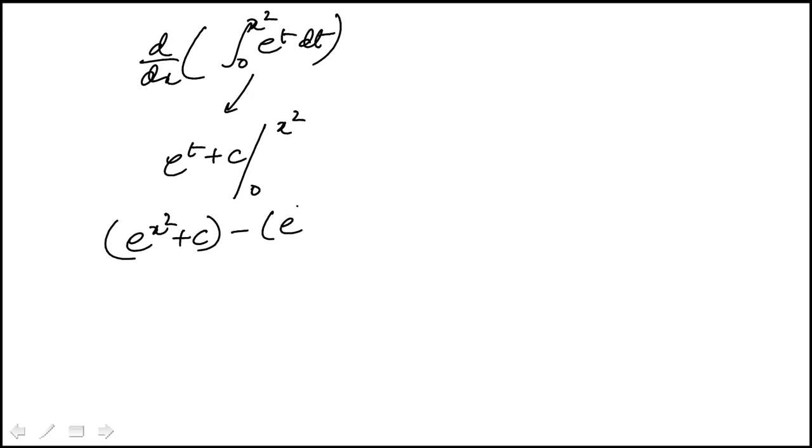And you'll see the constant term would disappear. And this becomes e to the x squared minus e to the 0, which is 1. So this is e to the x squared minus 1.